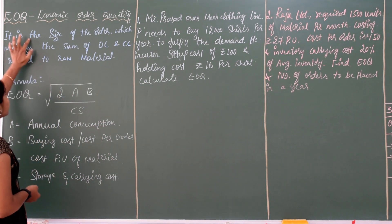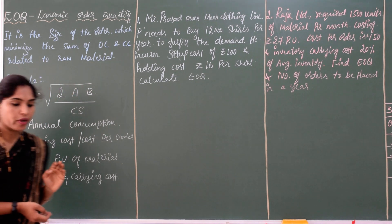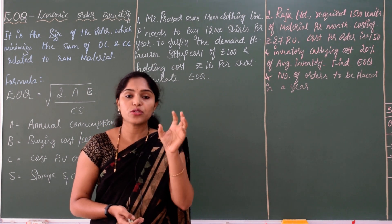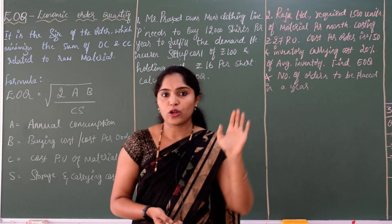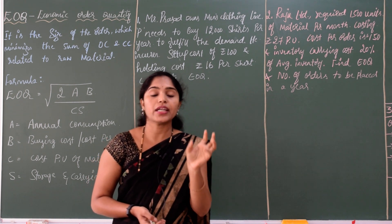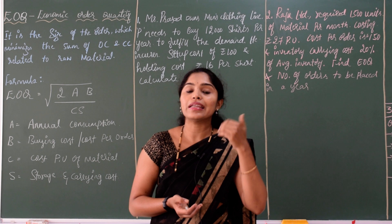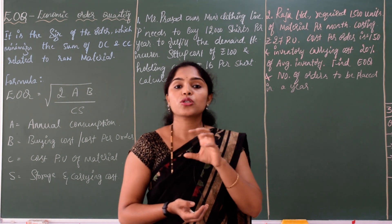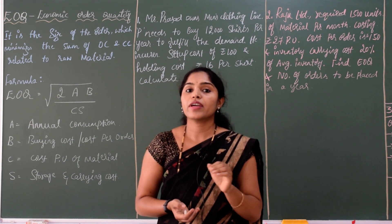Economic Order Quantity is the size of the order which minimizes the sum of ordering cost and carrying cost relating to raw materials. It is simply the quantity — say 500, 600, or 1000 units — that the organization is going to order. This helps the organization increase efficiency and profitability because reducing ordering cost and carrying cost saves money on raw material purchases.